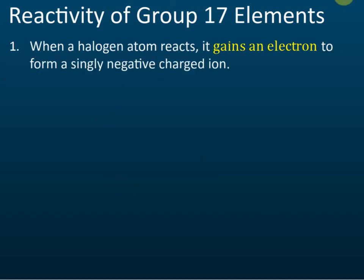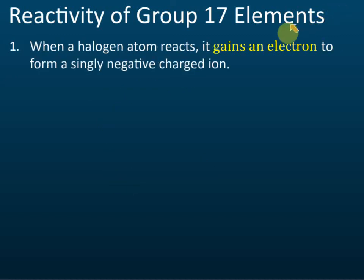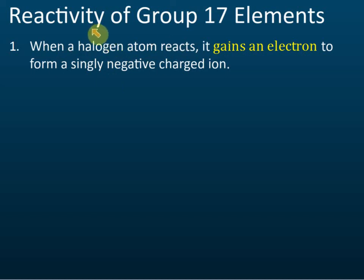So why does the reactivity decrease down the group? Compare this with Group 1 — when you go down Group 1, the reactivity increases and the elements become more and more reactive. But for Group 17, the reactivity decreases as you go down the group.